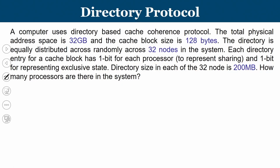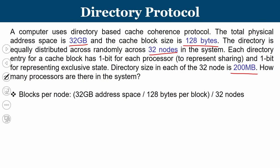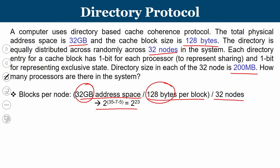The directory is equally distributed across 32 nodes. Each directory entry for a cache block has 1 bit per processor plus 1 bit for representing exclusive — so P+1 bits per cache block. The total directory size in each of the 32 nodes is 200 MB. The question asks: how many processors are there in the system? Key given data: 32 GB memory, 128-byte block size, 32 nodes, 200 MB per node.